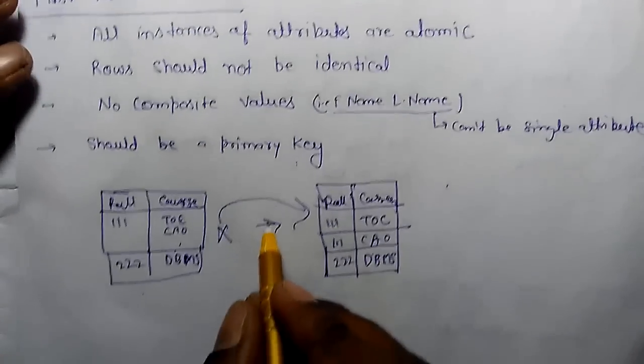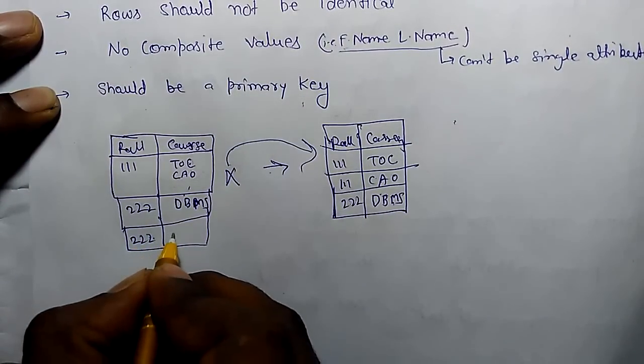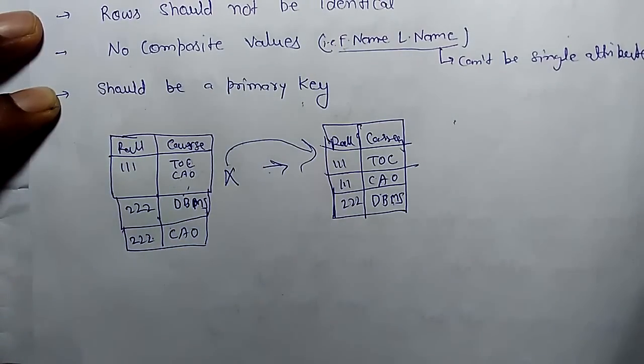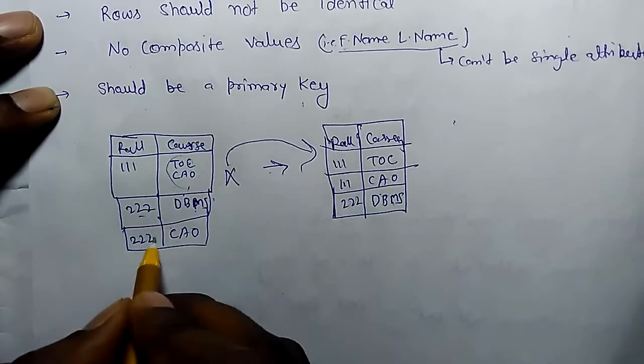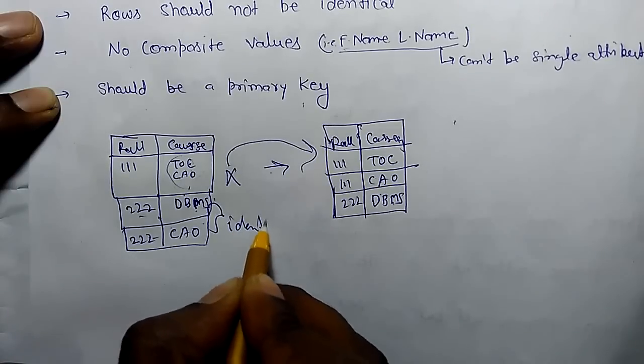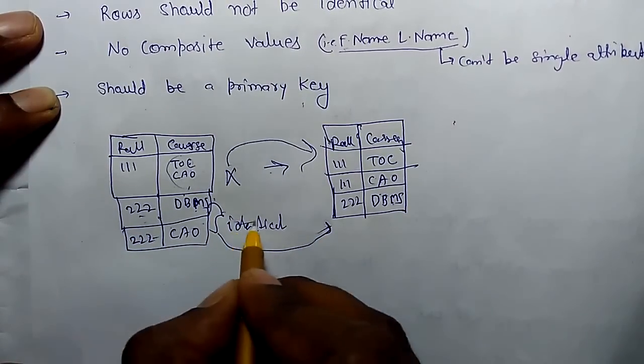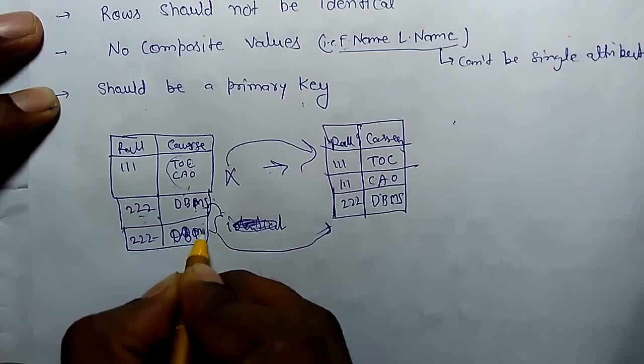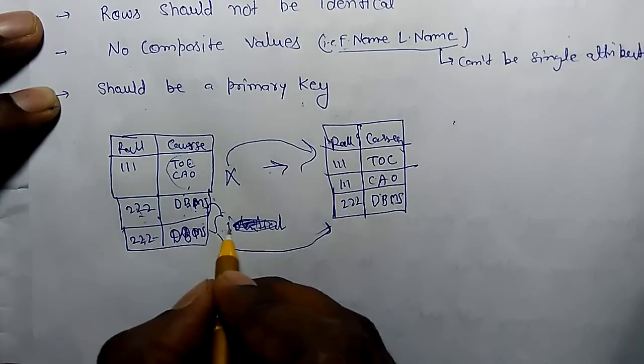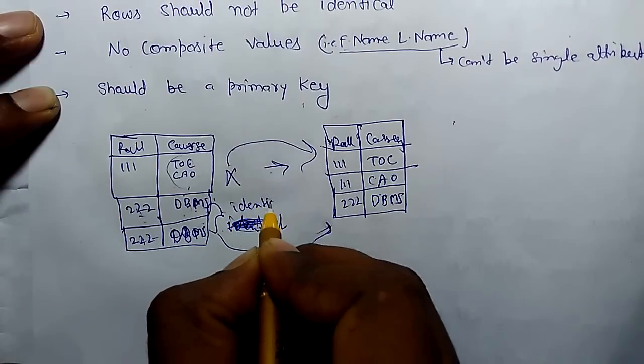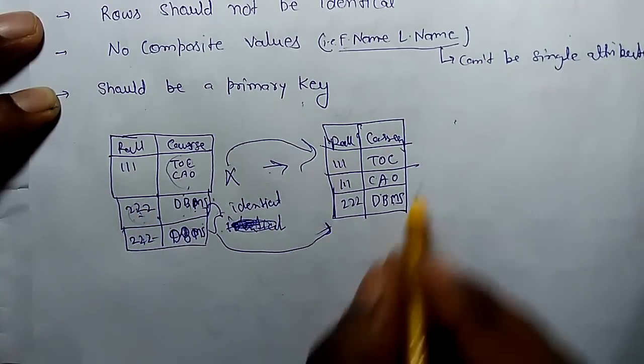Rows should not be identical. For example, if there is a table and both rows have DBMS as a course and the same roll number is there, at that time it is identical. So for converting to first normal form, you have to take only one row. Now it is in first normal form.